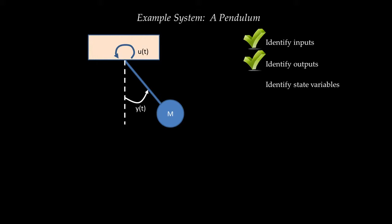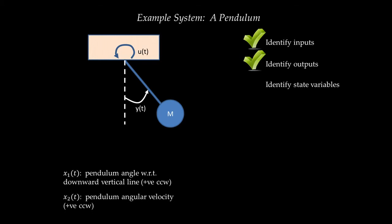So it makes sense to make the state variables: number one, the angle of the pendulum with respect to the downward vertical line, which I make positive counterclockwise. The second state variable is the angular velocity of the pendulum, also positive counterclockwise. We've identified the state variables and completed step three.